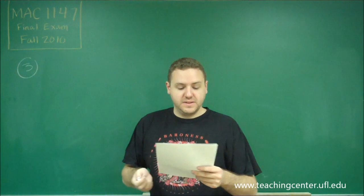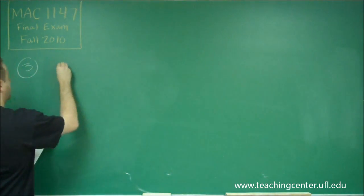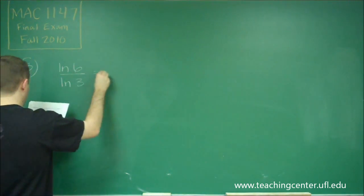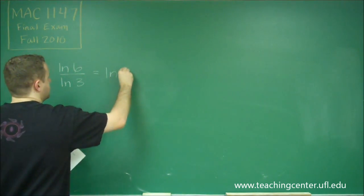Number three, we're asked to evaluate if the following statement is true. We have ln6 over ln3 is equal to ln2.